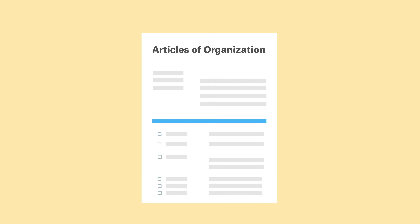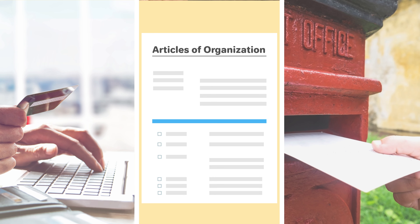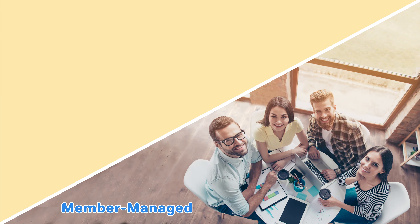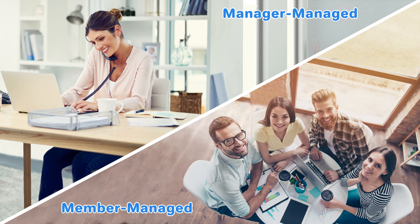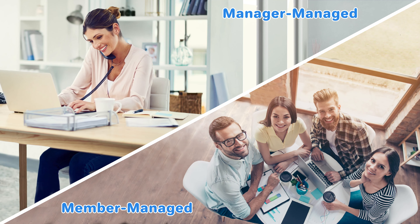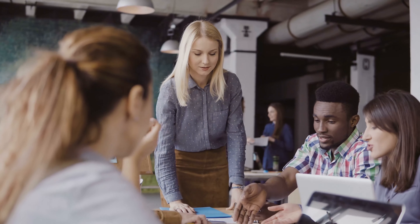Step three: file the articles of organization. To register your Kentucky LLC, you will need to file the articles of organization with the state of Kentucky. This can be done online, by mail, or in person. You will need to state whether your LLC will be member-managed or manager-managed. Member-managed means all members of the LLC manage the company, which is good for small organizations where everyone is involved in the day-to-day operations.